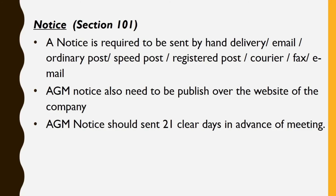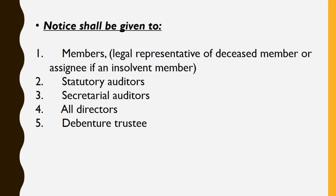Next is the notice of the annual general meeting, mentioned in section 101. A notice is required and should be sent by hand delivery, email, ordinary post, speed post, registered post, courier, fax, etc. An AGM notice also needs to be published on the website of the company. It should be given to the members 21 clear days in advance of the meeting. The notice shall be given to the members, the statutory auditors, secretarial auditors, all the directors of the company, and also to the debenture trustee if any.